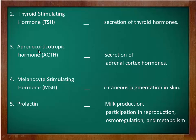The third hormone is adrenocorticotrophic hormone, or ACTH. This hormone targets the adrenal cortex region of the adrenal glands, located just above the kidneys, and controls the secretion of hormones from the adrenal cortex.